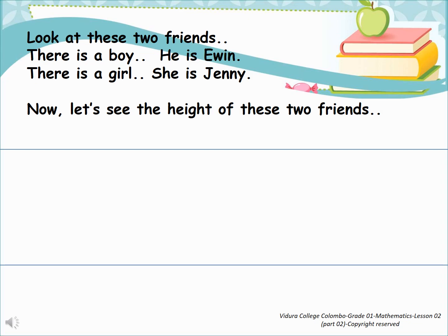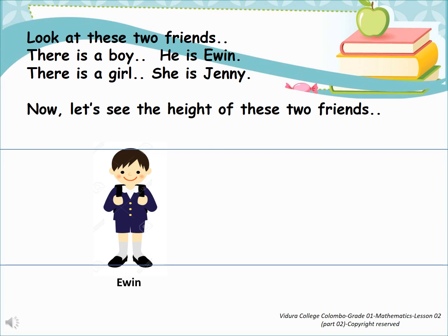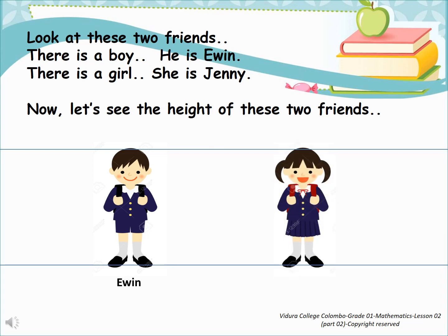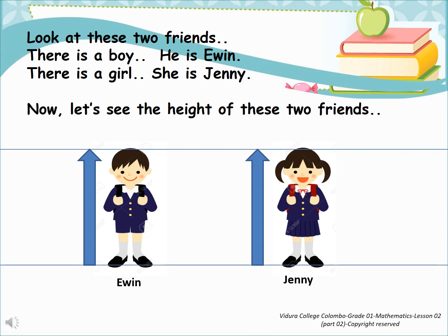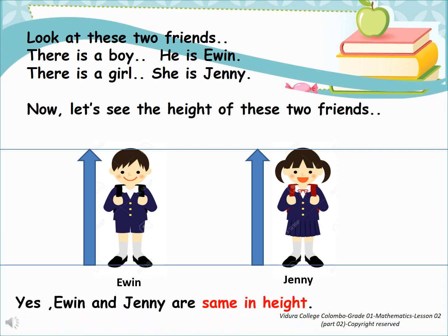Now my dear children, look at these two friends. There is a boy — he is Evin. There is a girl — she is Jenny. Let's see the height of these two friends. Here you can see Evin's height, and here you can see Jenny's height. Tell me, what is your answer? Yes, Evin and Jenny are same in height. Well done. Now you know what same in height is.